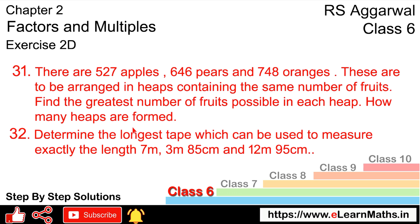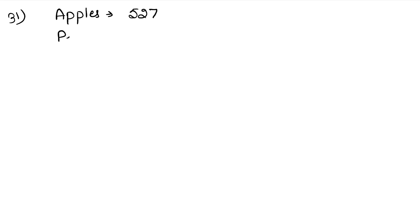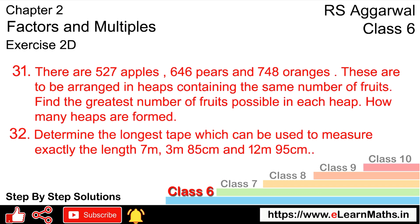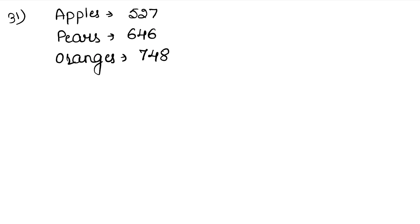How do we do this? When we need the greatest number with no remainder, we find the HCF. So we will use the division method. We have 527 apples, 646 pears, and 478 oranges arranged in heaps containing the same number of fruits — greatest means HCF.